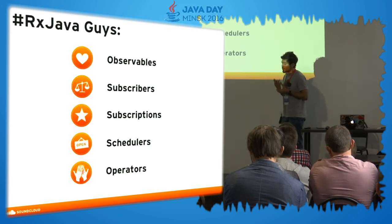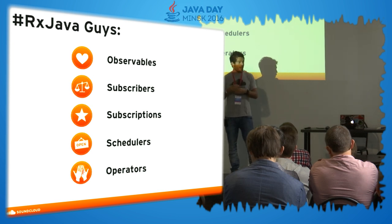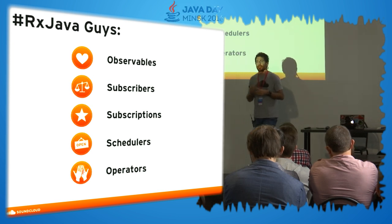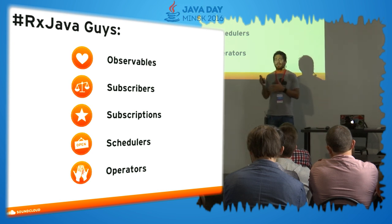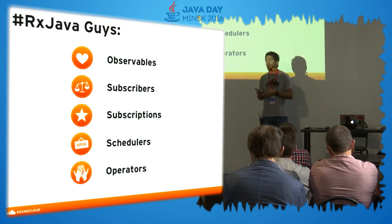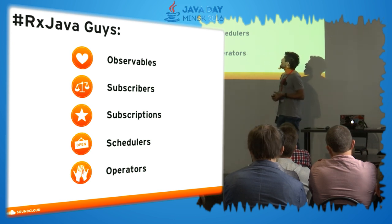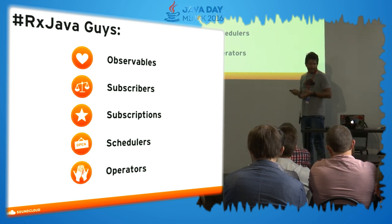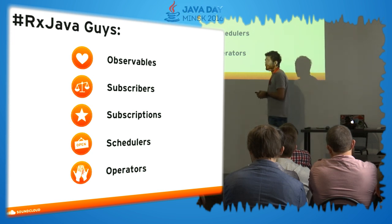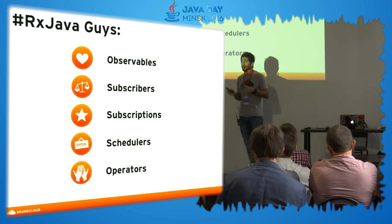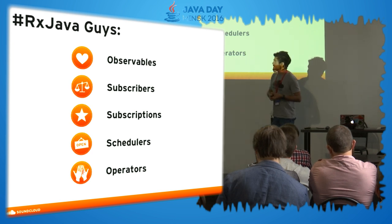Let me introduce what I call the RxJava Guides. From now on we're going to talk about RxJava, and these are the main concepts you need to understand to dive deeper into it. We have observables, subscribers, subscriptions, schedulers, and operators. Are you guys familiar with some of these concepts? Probably the people who have played around with RxJava.